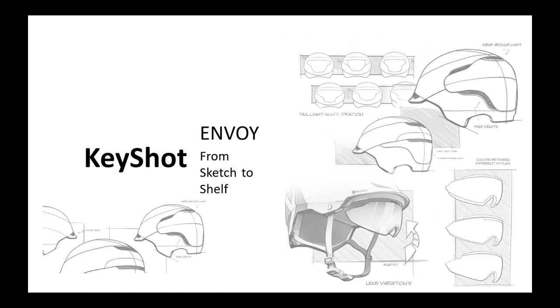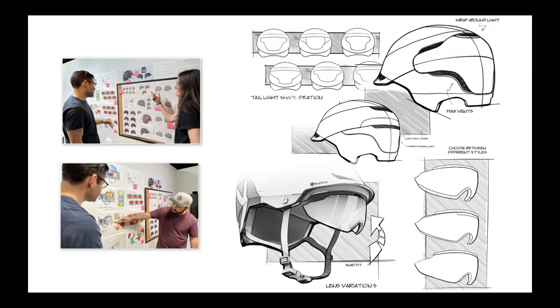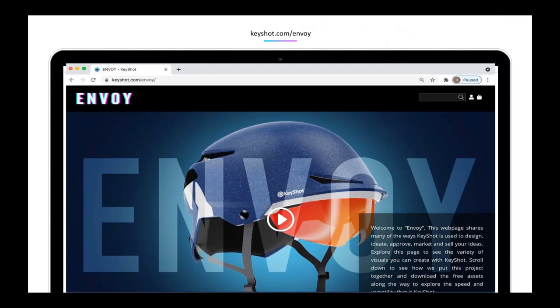These are great questions and we're going to answer a lot of them today. The creative team at Luxion took this helmet concept called Envoy from the beginning stages — from sketching all the way to marketing assets — to underscore the sketch-to-shelf concept. They did this to better illustrate how you can implement KeyShot in multiple phases throughout the design process. So we'll see a lot of imagery of helmets. You can visit KeyShot.com/Envoy, a page full of example images, assets, and plenty of KeyShot files you can download.